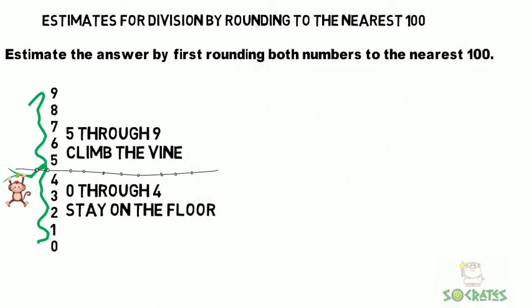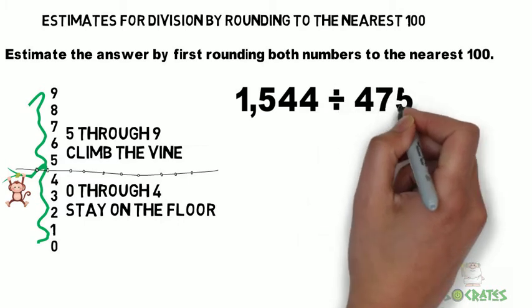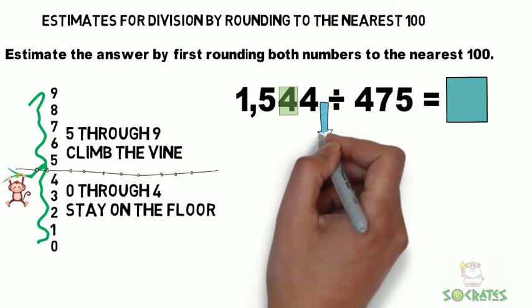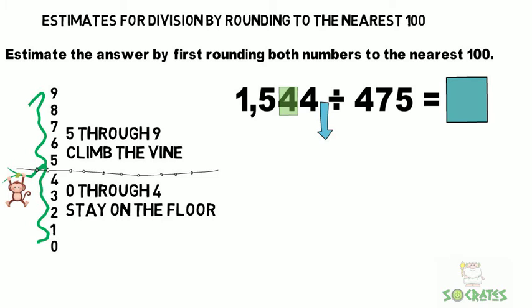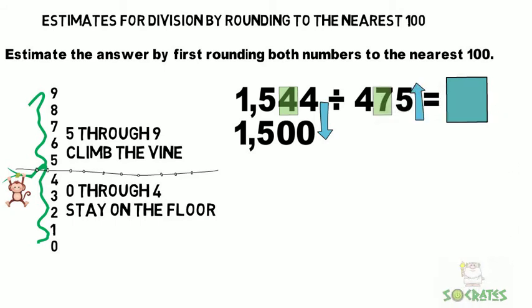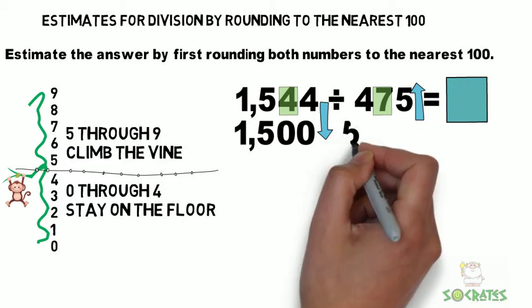Estimate the answers by first rounding both numbers to the nearest 100. So if we have 1,544, we're going to round down because the 4 is telling us to go down to 1,500 and then the 475, we look at the 7 in the tens place and that tells us to go up to 500.